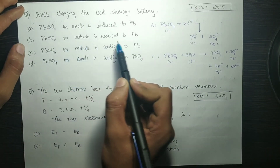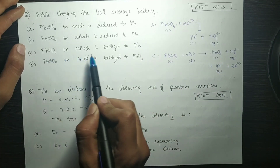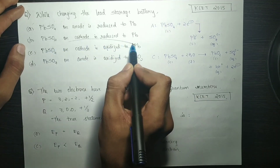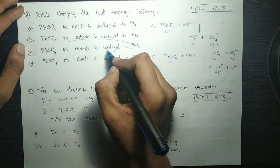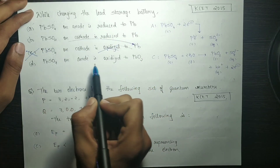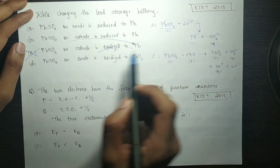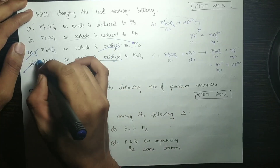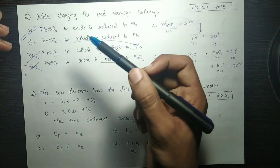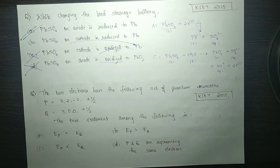PbSO4 on cathode is reduced to Pb. PbSO4 on cathode is oxidized to Pb — no chance. PbSO4 on anode is oxidized to PbO2 — what's at the anode? It makes it reduce. So the correct answer is confirmed — first option is the correct answer, and the correct answer will be ticked.